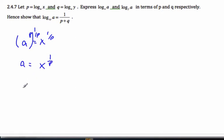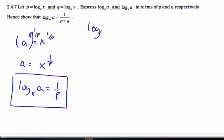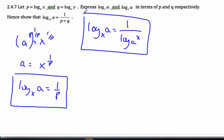And so then I can say that log to the base x of a is equal to 1 over p. And so what I've just shown you is, I know that log x of a is the same as 1 over log base a of x. And this is an identity that I'm going to use several times throughout this problem.